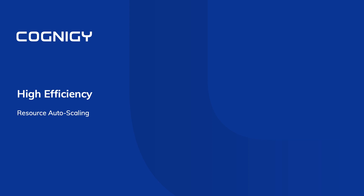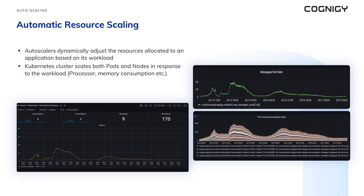Autoscaling is a technique used to automatically adjust the resources of an application based on its workload — scaling CPU, memory, and the number of instances. Our SRE team precisely configures autoscaling mechanisms to adapt to changing workloads while minimizing infrastructure costs and guaranteeing our SLAs. This slide showcases a real scenario where our autoscaling system responded to unexpected load spikes in one of the environments — you can see how the number of replicas increased in response to conversations and TCP connection spikes.